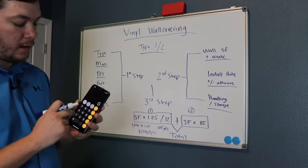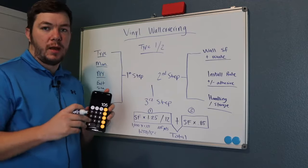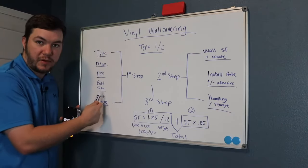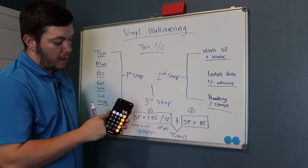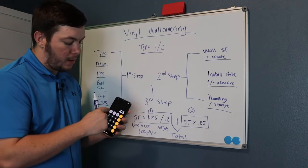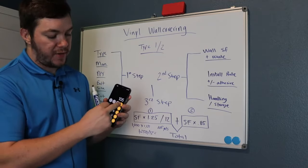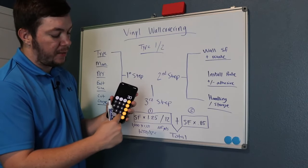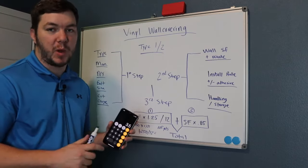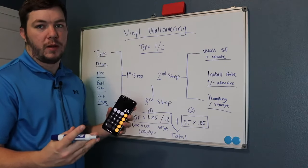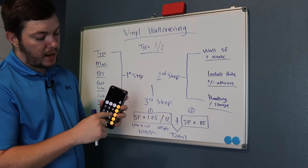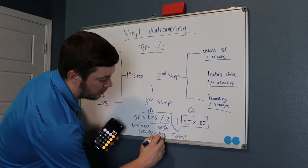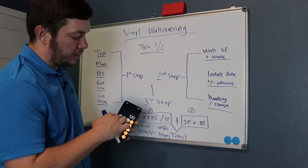So 105 yards is how much I need. You need to refer back to the manufacturer's bolt size for that pattern. Let's say they have 30-yard bolts. So 105 divided by 30 — that tells you how many bolts you need, which is 3.5 bolts. In my opinion, you might as well go ahead and order four bolts just to have even more waste buffer. So four bolts times 30 yards — you're going to need to order 120 yards total of wall covering, which will give you four bolts.